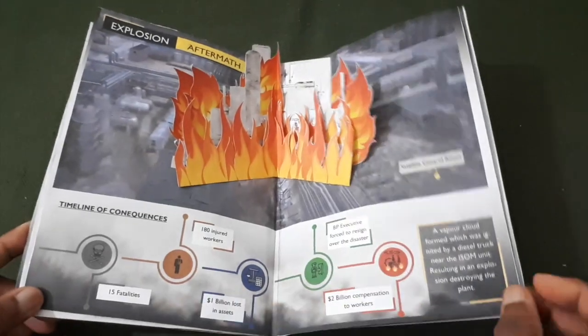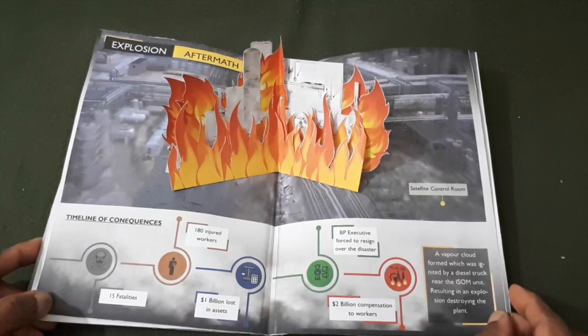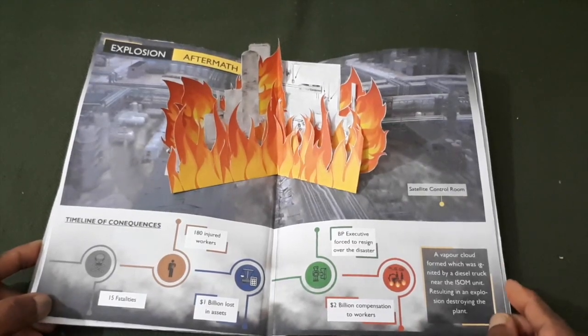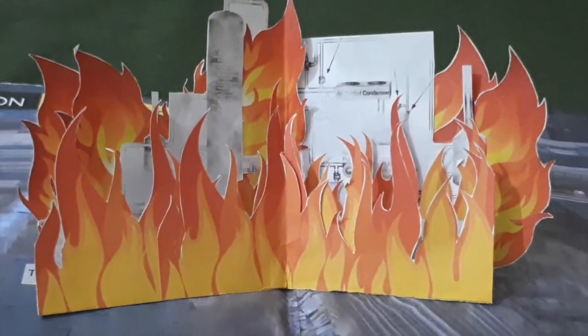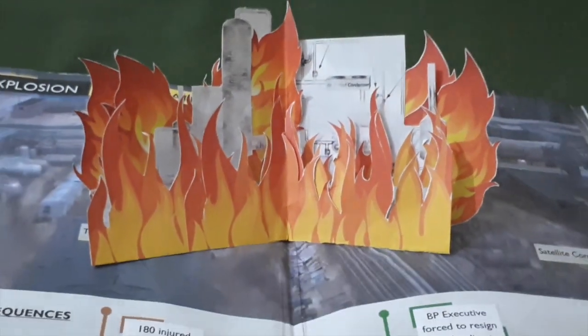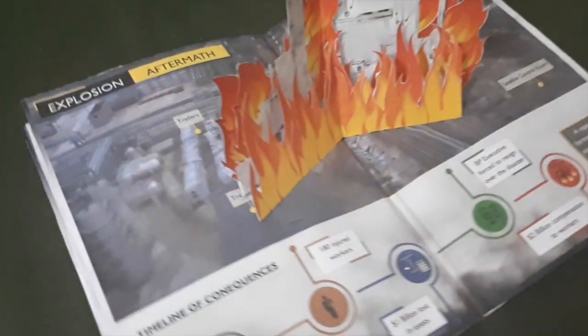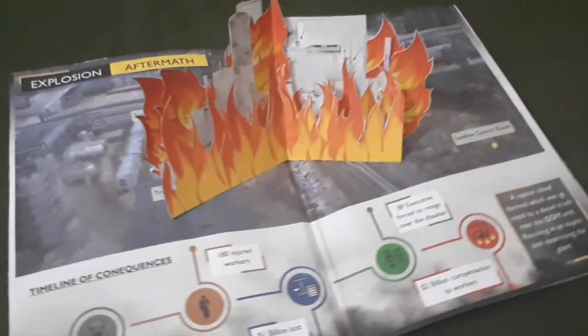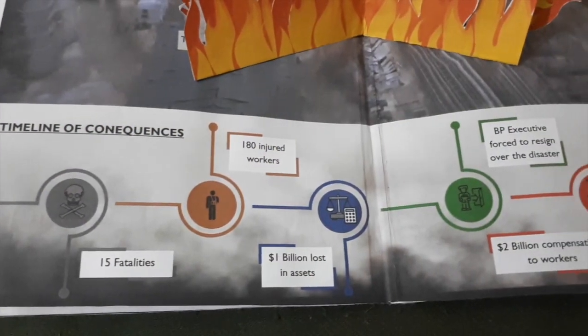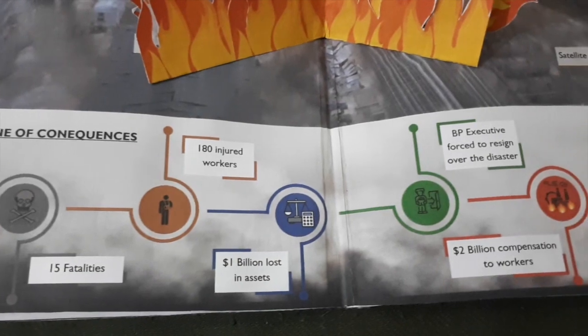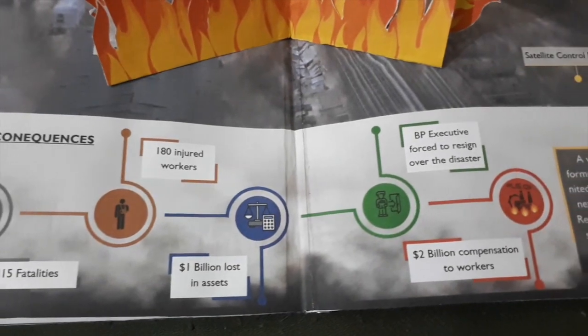The final page shows how the vapour was ignited and the consequences of the disaster. The pop-up is a reference to the destruction caused by the event, and along the bottom are the consequences of the disaster.